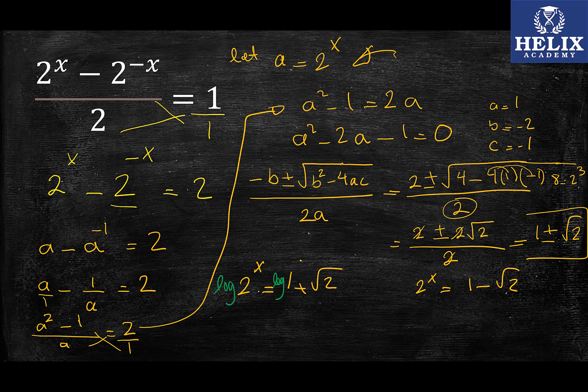And when I take the log of both sides, this x can be moved to the back, so I can have x log(2) = log(1 + √2). And then therefore x is going to be equal to log(1 + √2) over log(2).